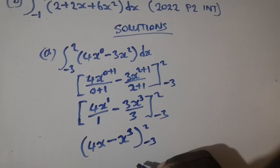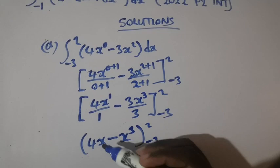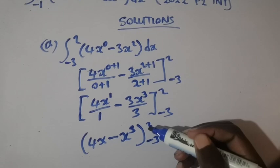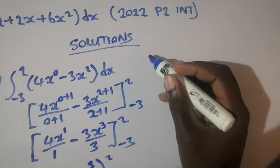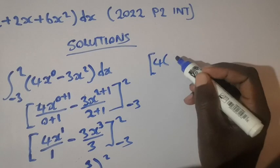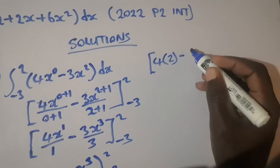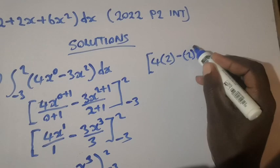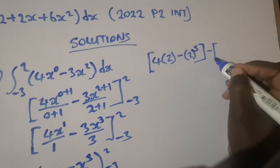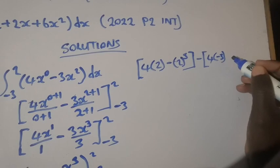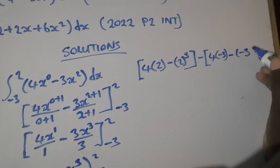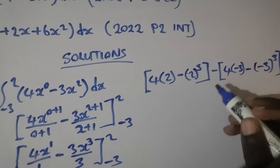At this stage, we have to replace x with 2 to get the upper limit value, and then replace x with negative 3 to get the lower limit value. So for the upper limit we substitute x equals 2: we get 4 times 2 minus 2 to the power 3. For the lower limit we substitute x equals negative 3: we get 4 times negative 3 minus negative 3 to the power 3.